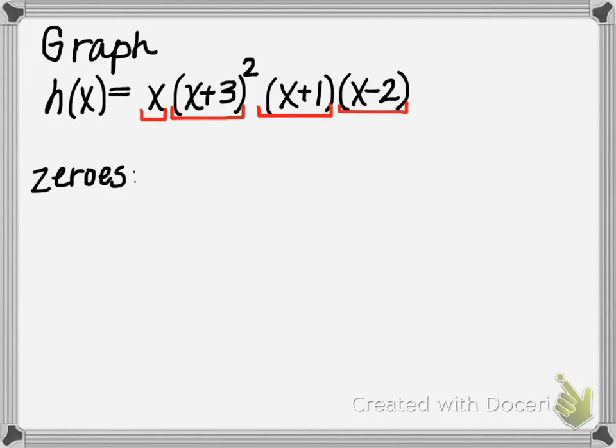And the factor theorem basically is telling us that if we have the zeros, then we can figure out the factors. Well, the reverse is also true. If we have the factors, then we also know the zeros.